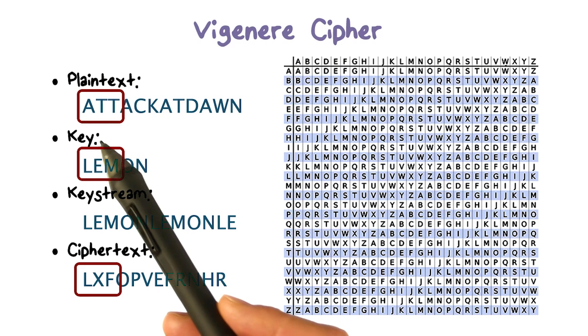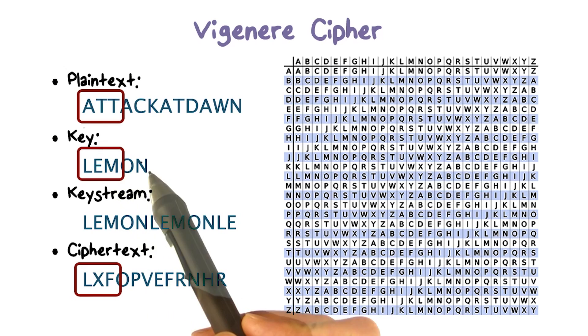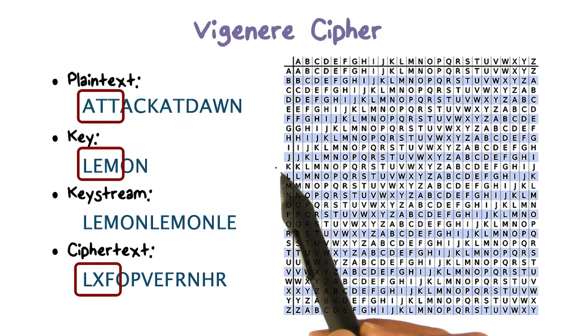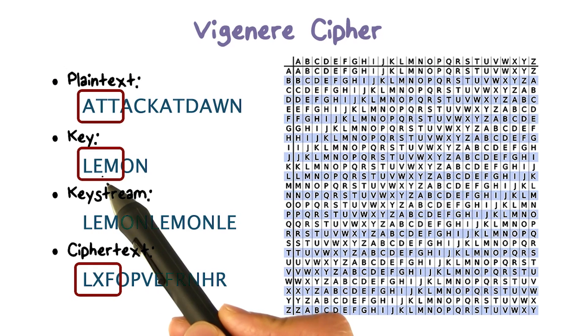Suppose we have a plaintext and the first three letters are A, T, T. And we have a key. In fact, the key stream should be as long as the plaintext. So this will be lemon, lemon, lemon, and go on. Here, the first three letters of the key stream are L, E, M.